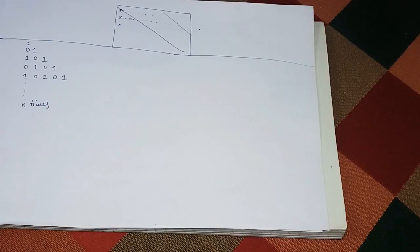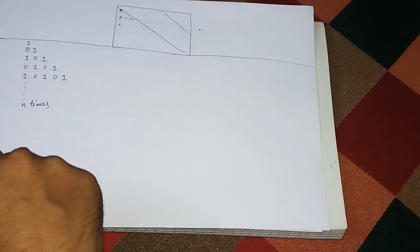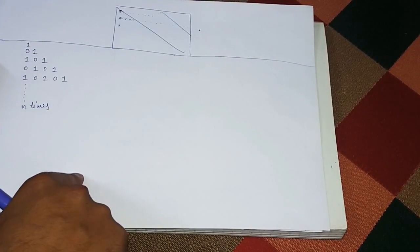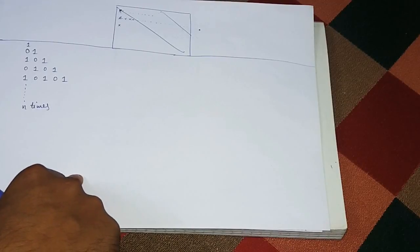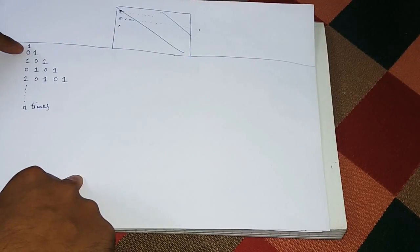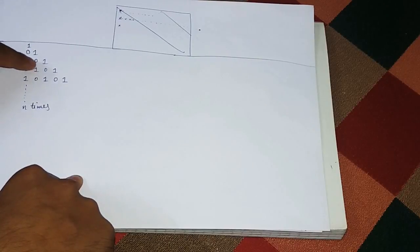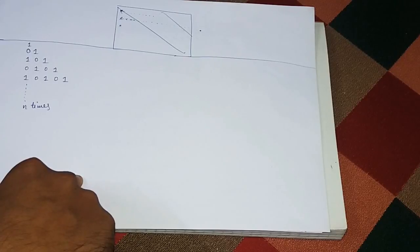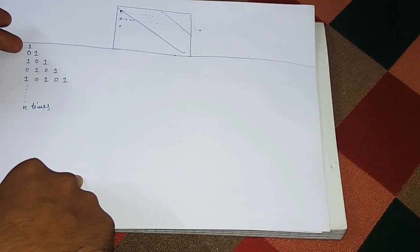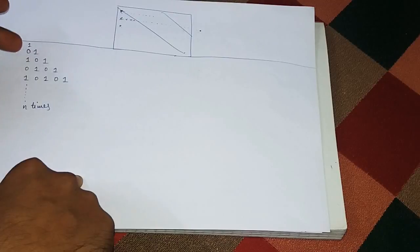So let's see — in this question we have to print this pattern. If you can see: there is 1, then 0, then 1; then 1 0 1; then it starts with 0, then starts with 1 again. So how do we tell the computer to print the first row with 1, then the second row starting with 0 and alternating the bits?